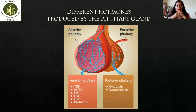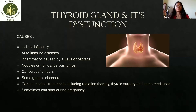Now we look at the thyroid gland and its dysfunction. We all know the thyroid is a butterfly-shaped gland just in front of the windpipe. The main function of the thyroid gland is to help regulate the metabolism in our body. There are two main hormones in the thyroid: T3 and T4. When these hormones are not balanced, thyroid dysfunction occurs.